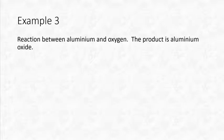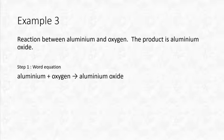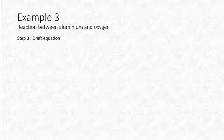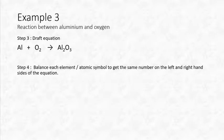Let's look at another example: the reaction between aluminium and oxygen, which produces aluminium oxide. Word equation: aluminium + oxygen → aluminium oxide. The formulas are Al, O₂ (oxygen exists as a diatomic molecule), and Al₂O₃. Draft equation: Al + O₂ → Al₂O₃.